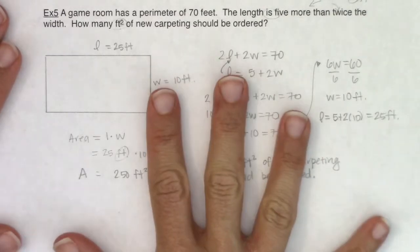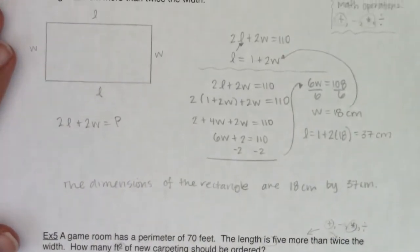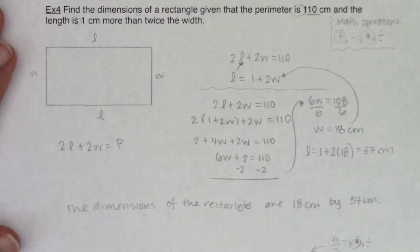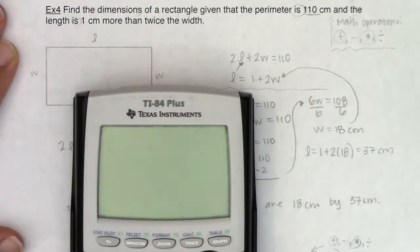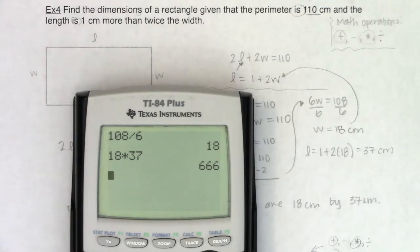Just to show you what we could have done—I know they didn't ask for the area in example 4—but if they had asked me for the area in example 4, I would have just taken 18 and multiplied it by 37. The area was 666 centimeters squared or square centimeters.